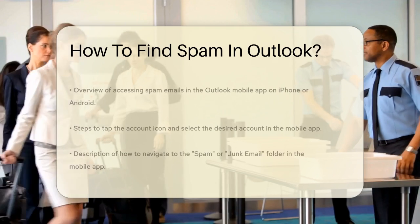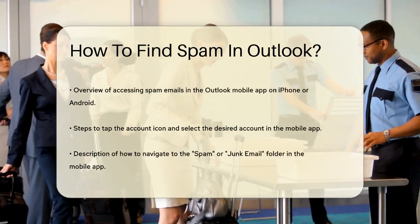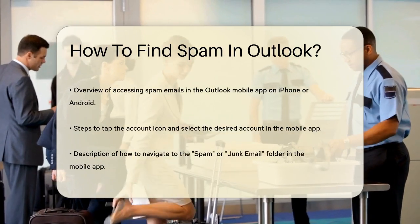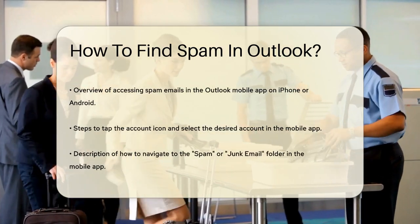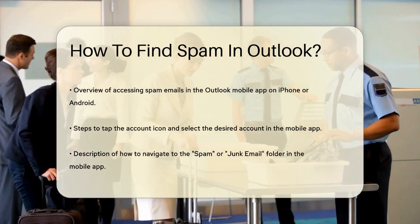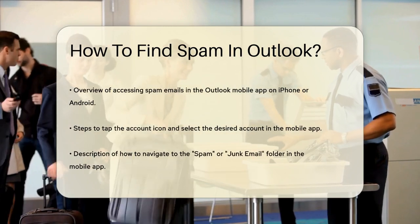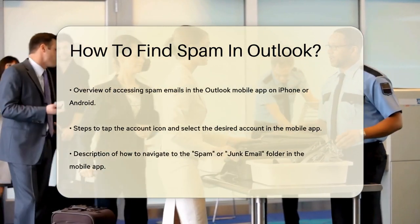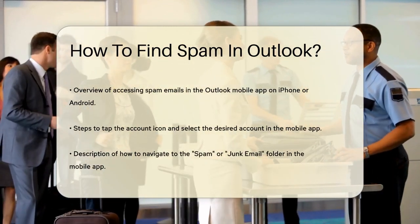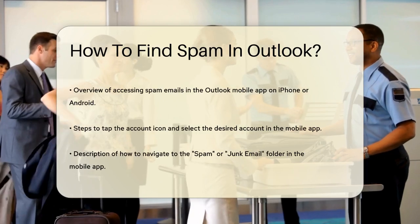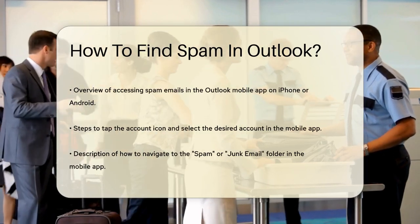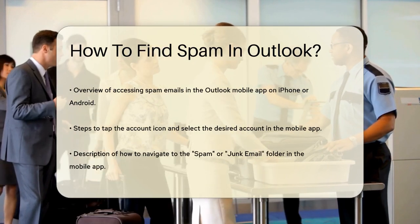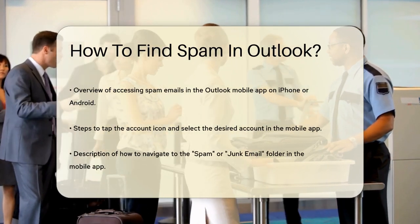If you're using the Outlook mobile app, the process is similar but a bit different. Open the Outlook app on your iPhone or Android and tap the Account icon at the top left of the screen. This will bring up a pop-out menu. Select the account you want to view and then tap the Account icon again to open the menu once more. Here, you'll find the Spam or Junk Email folder where all your spam emails are stored.